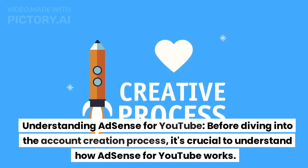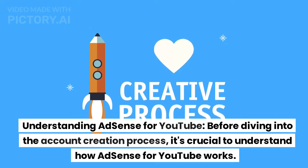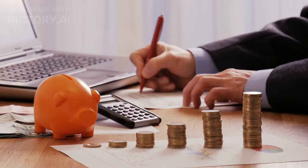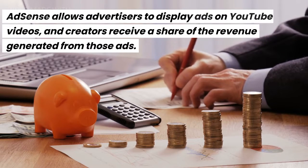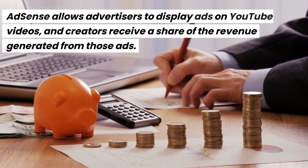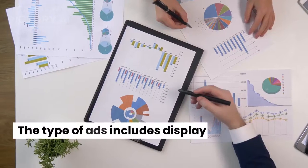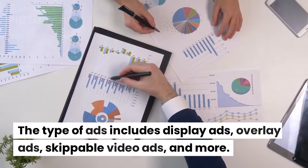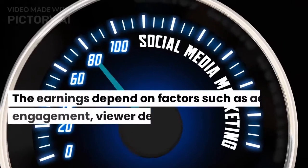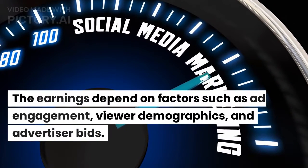Understanding AdSense for YouTube. Before diving into the account creation process, it's crucial to understand how AdSense for YouTube works. AdSense allows advertisers to display ads on YouTube videos, and creators receive a share of the revenue generated from those ads. The types of ads include display ads, overlay ads, skippable video ads, and more. Earnings depend on factors such as ad engagement, viewer demographics, and advertiser bids.